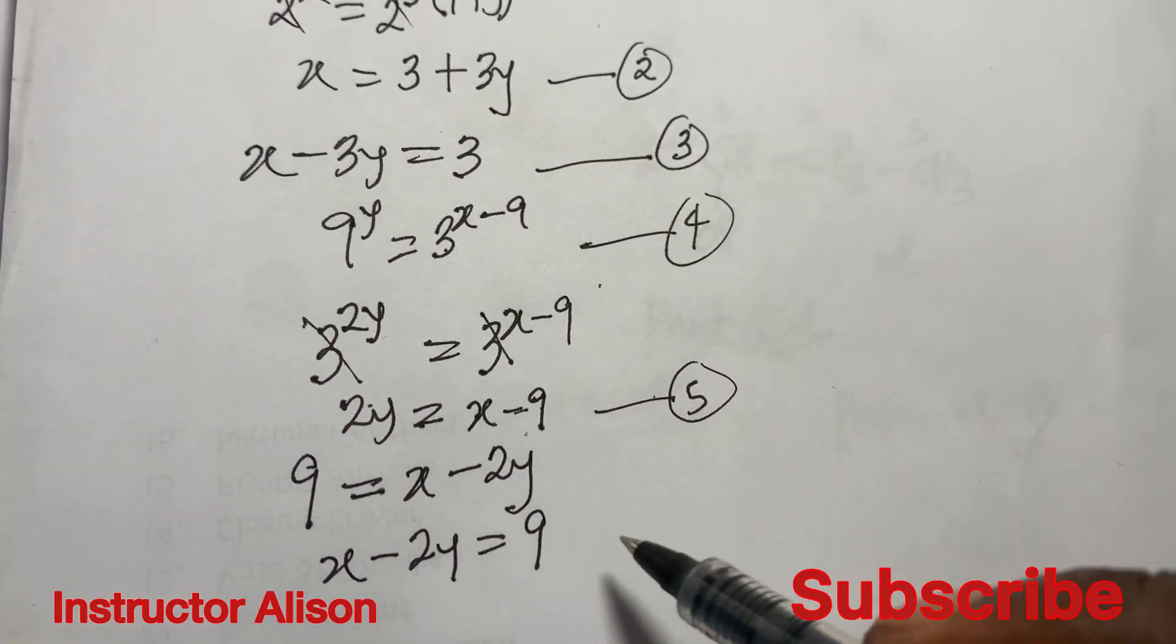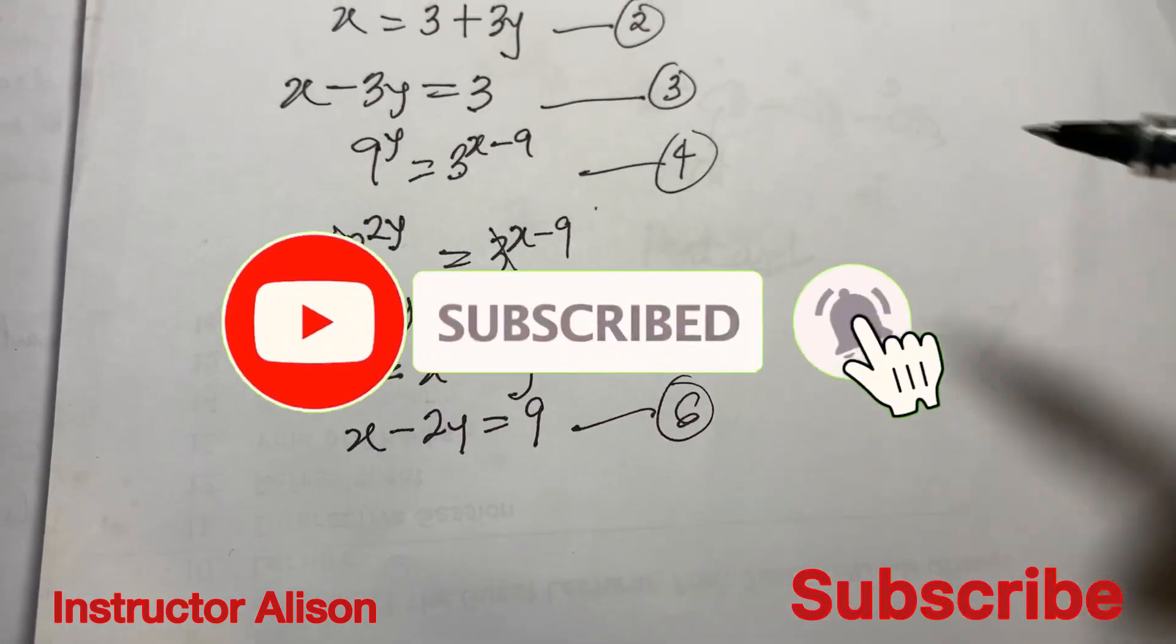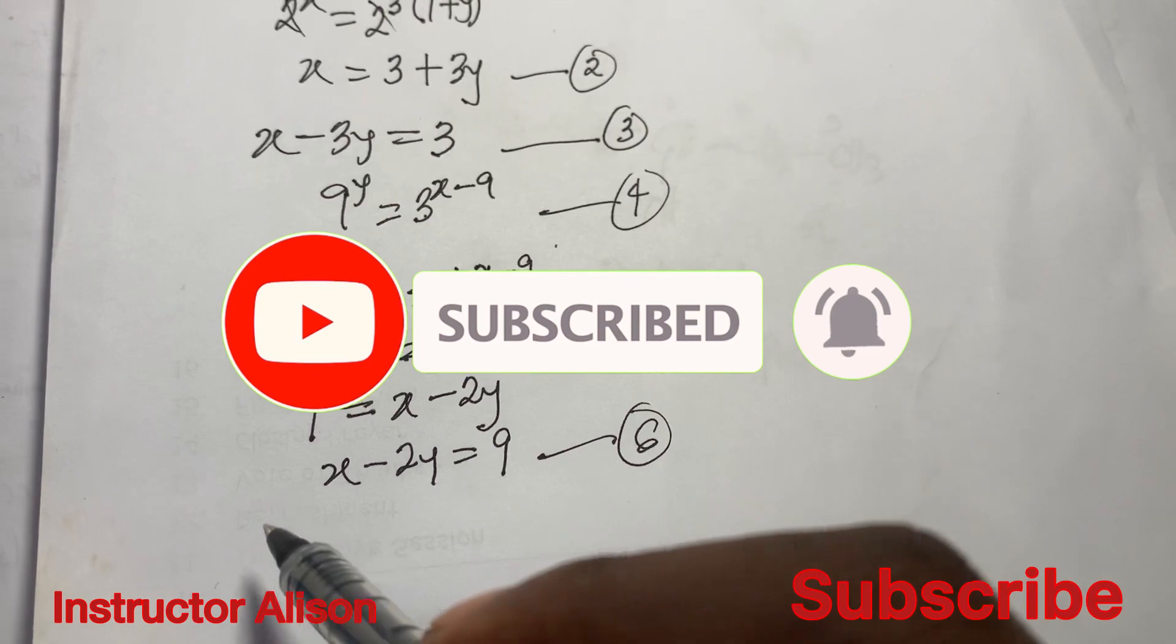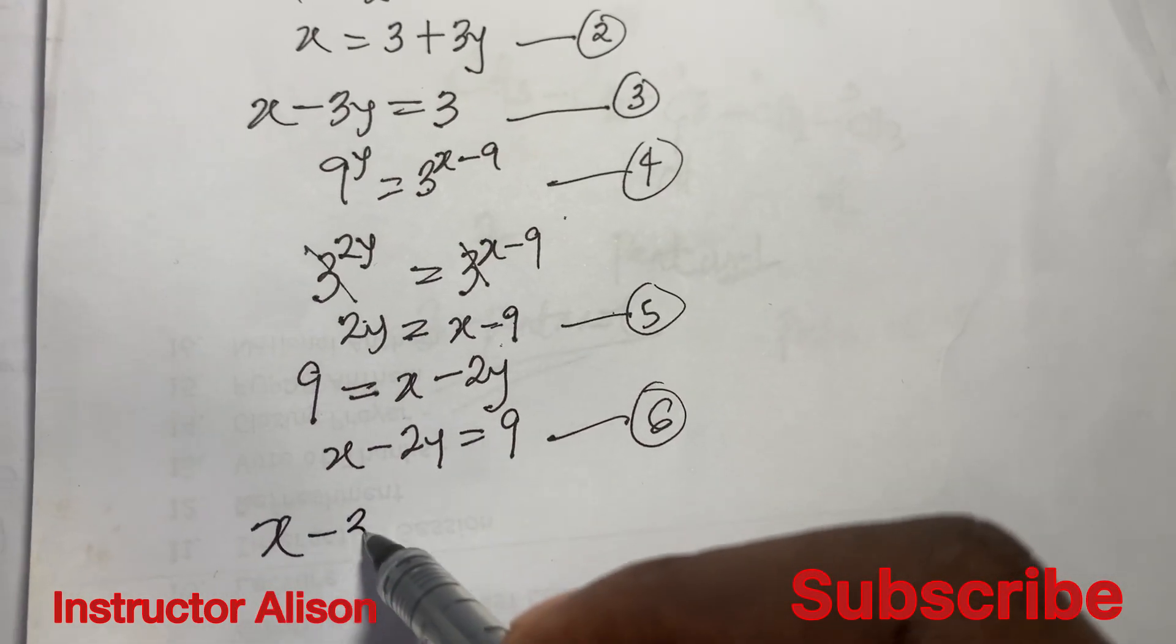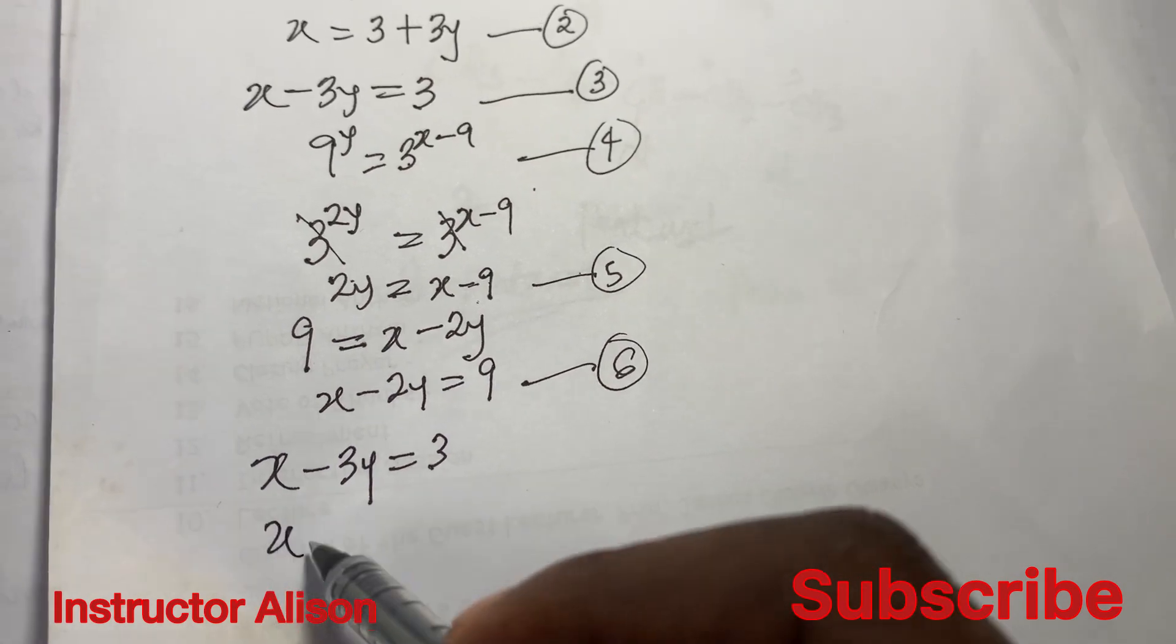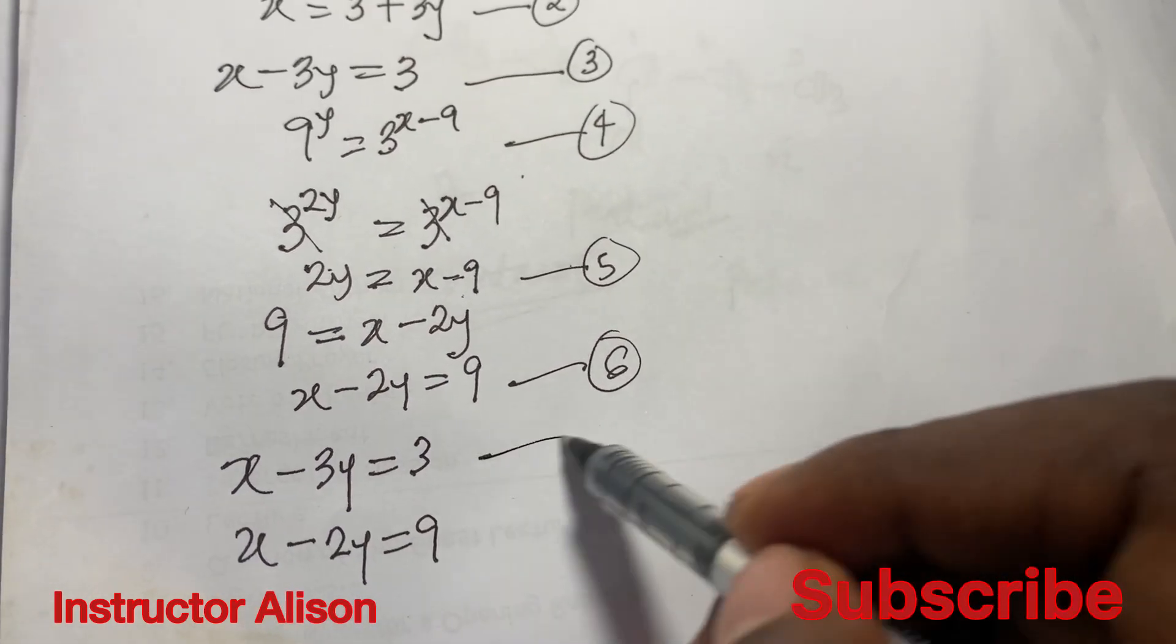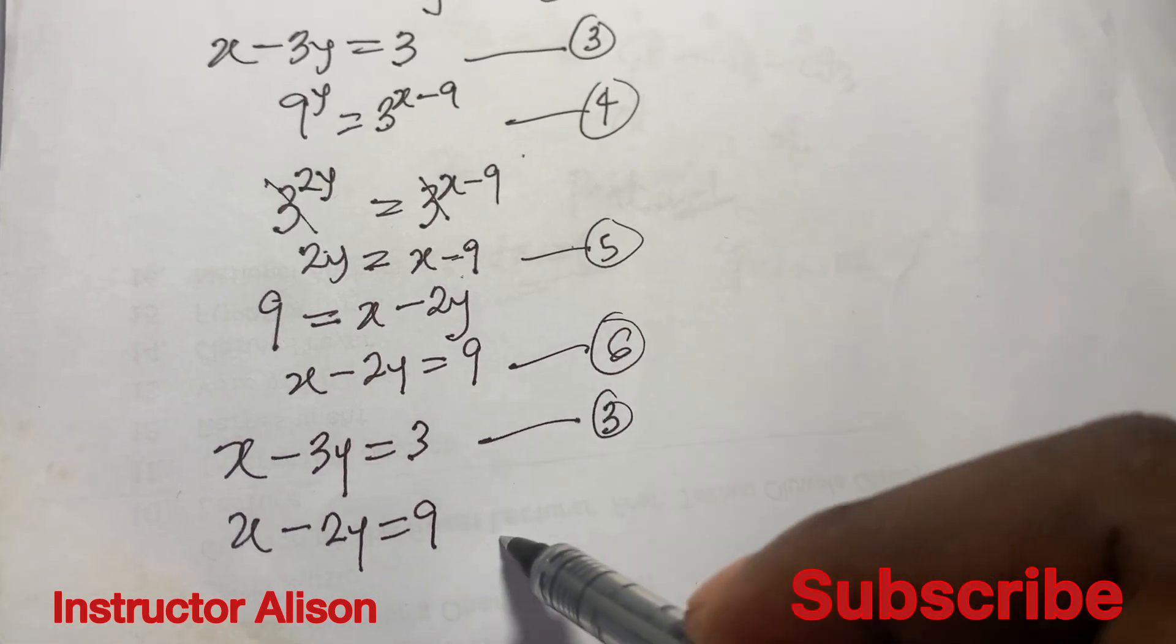Keep in mind nothing crosses, I just flip the problem. We can make this equation 6. So bringing equation 3 and 6 together we have x minus 3y equal to 3 and x minus 2y equal to 9.